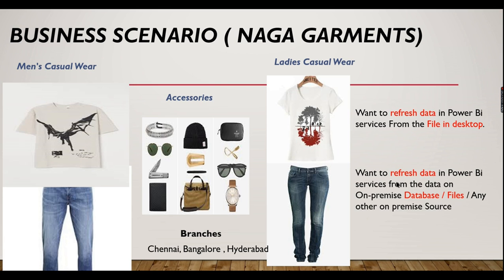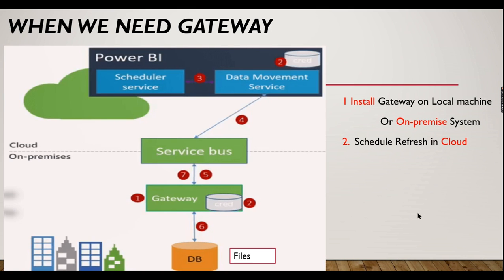You need a gateway if your database, files, or underlying data sits in your on-premise server or desktop, and you need Power BI Service in the cloud to contact that data. On-premise simply means your local system or internal server — that is called on-premise. This is Power BI Services sitting in the cloud, and the gateway sits on the on-premise side.